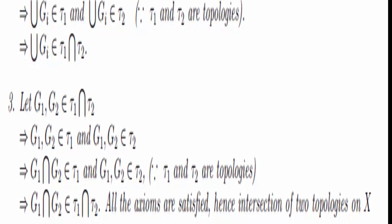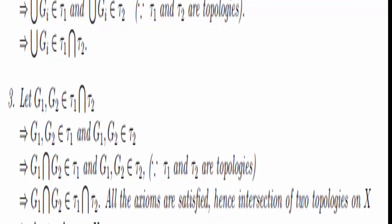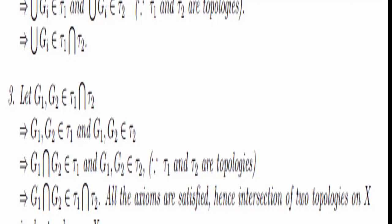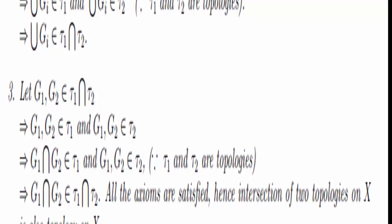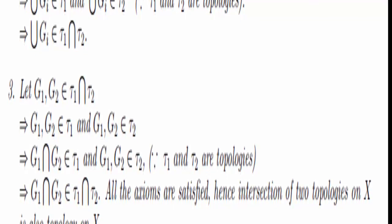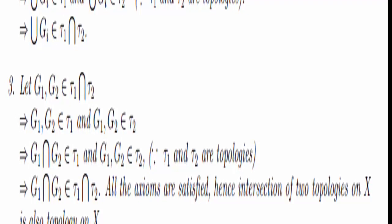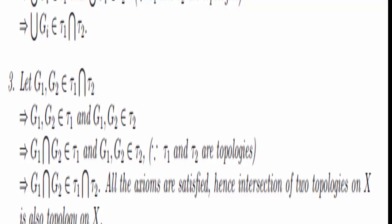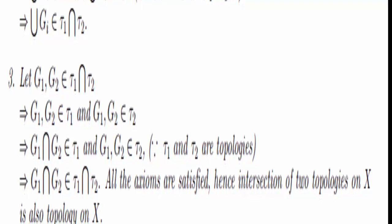All right, so that was pretty easy, and that completes the proof. We showed that X and the empty set are in the intersection, we showed that the union of any number of open sets is also in the intersection, and we showed that any finite intersection of open sets is in our intersection. So τ₁ ∩ τ₂ is a topology on X.